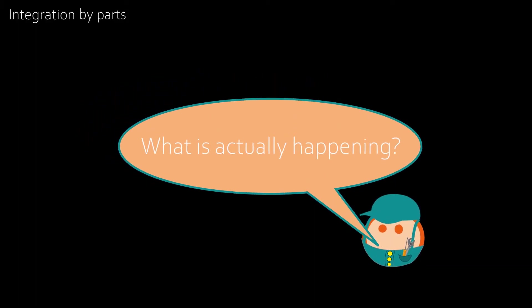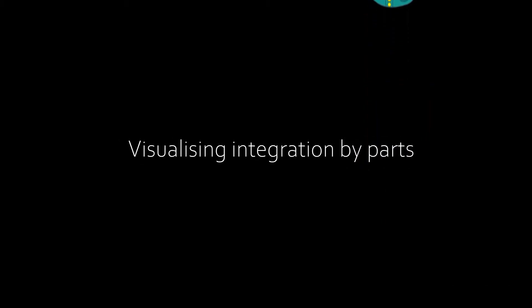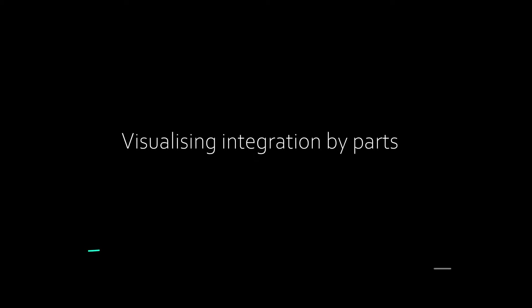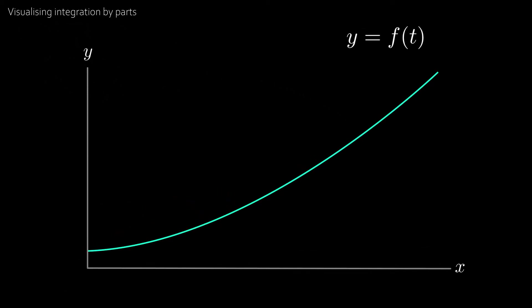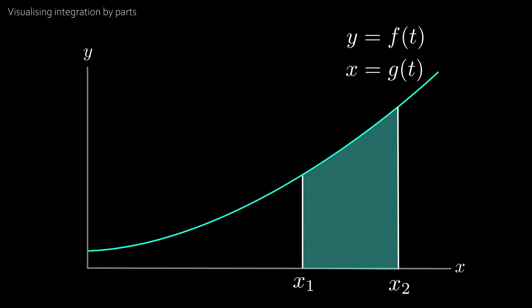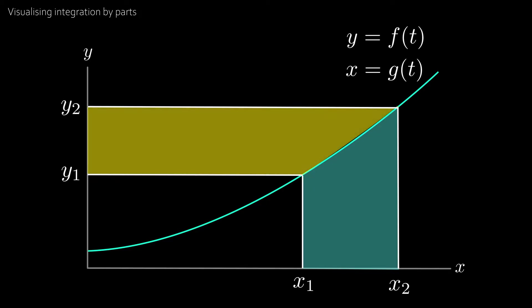But hold on, what is actually happening here? What is integration by parts even doing? How can we visualize integration by parts? Now let's say we had a curve defined parametrically by y equal to f of t and x equal to g of t. And let's say that we wanted to find the area between x1 and x2, and we also want to find the area between the corresponding y1 and y2. And since we have a parametric equation, we can say that x1 is g of a, which gives y1 as f of a.